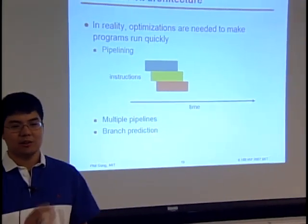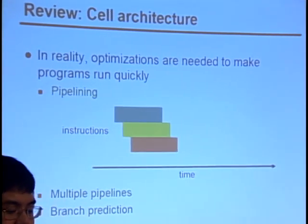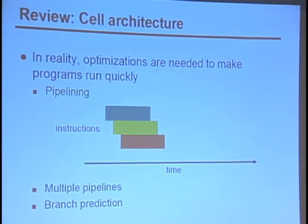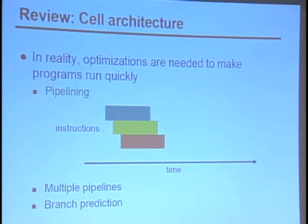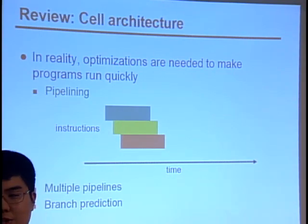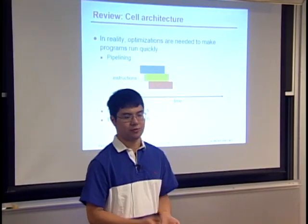For real hardware, waiting for one instruction to finish before the next one starts is going to be too slow. So there are various optimizations they do on the hardware to run instructions sooner. The big one is pipelining, where you have multiple stages inside your processor and you can push each instruction in before the previous one has completed. With pipelining, you're subject to dependencies between instructions. For example, if one instruction reads from a value that the previous instruction wrote, you can't start the second instruction until after the first has completed. The cell processor actually has multiple pipelines, and another optimization is branch prediction to reduce stalls from branching.